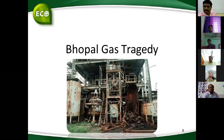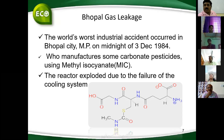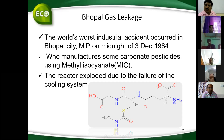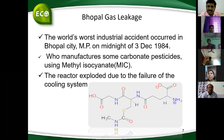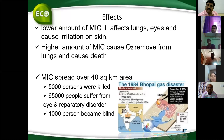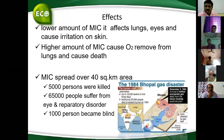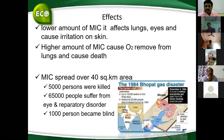The next incident is the Bhopal gas tragedy. The world's worst industrial accident occurred in Bhopal city, Madhya Pradesh, on December 3, 1984. That is the main carbonate pesticide manufacturing industry. Methyl isocyanate (MIC) is an intermediate compound for carbonate manufacturing. Accidentally, at midnight of December 1984, MIC leakage interacted with water, causing reactions and smoke; the reactor exploded due to failure of the cooling system. Lower amounts of MIC affect the lungs and eyes; higher amounts remove oxygen from the lungs causing death. Nearly 5,000 persons were killed, 65,000 people suffered from eye and respiratory disorders, and 1,000 persons became blind.